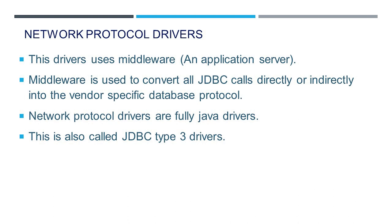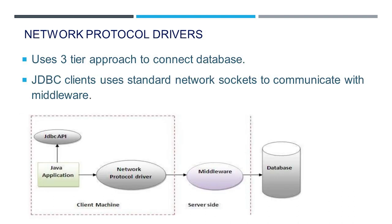You can see the middle layer between the database and the Java application, which is used to convert JDBC calls to a vendor-specific protocol. The network protocol driver uses a three-tier approach to access the database. The first layer is the Java application running on the client machine, the second layer is the middleware, and the third layer is the database. The middleware interacts with both the client application and the database. The JDBC client uses standard network sockets to communicate with a middleware application server, which then translates the socket information into the call format required by the DBMS and forwards it to the database server.